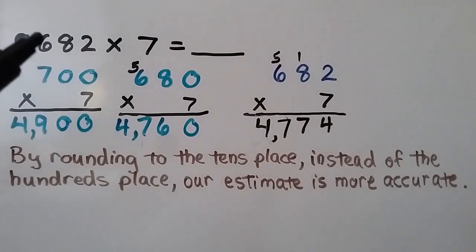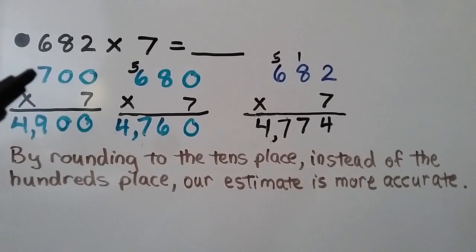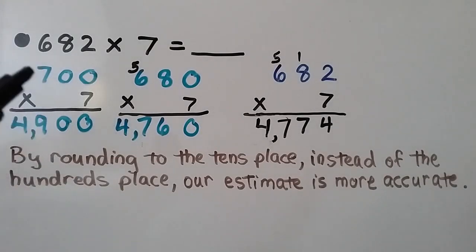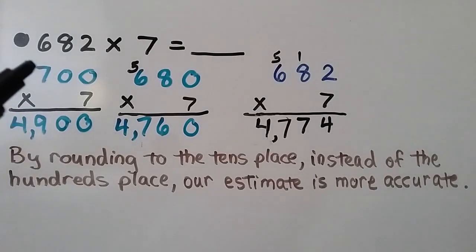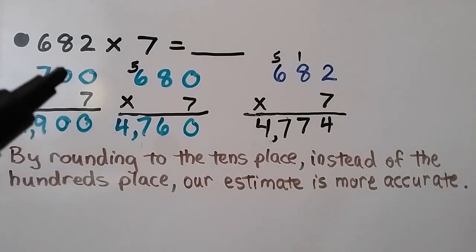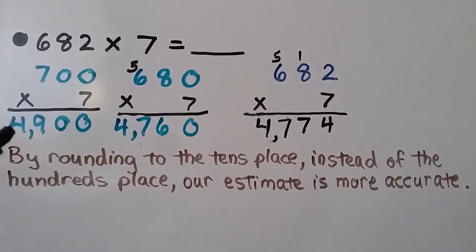Here we have 682 times 7. The 8 tells the 6 to go up to a 7, then they become 0, so it rounds to 700. When we do 7 times 700: 7 times 0 is 0, 7 times 0 is 0, 7 times 7 is 49. We have 4,900.